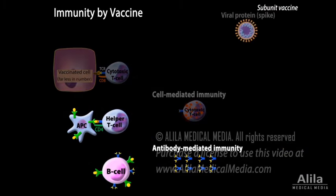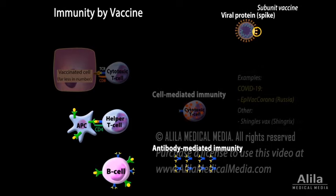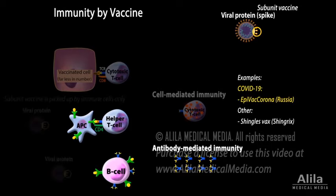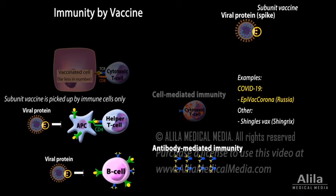Subunit vaccines contain only part of the virus, usually a spike protein. These vaccines cannot cause disease, but they may not be seen as a threat to the immune system, and therefore may not elicit the desired immune response. For this reason,